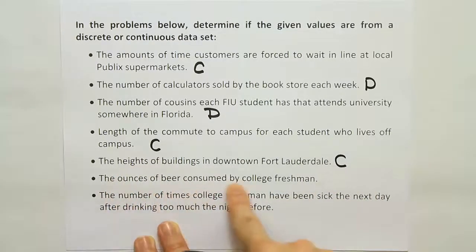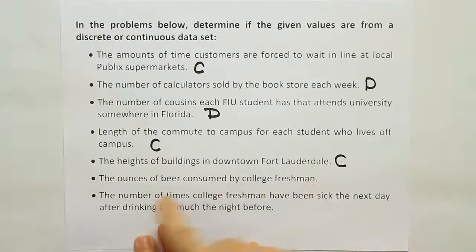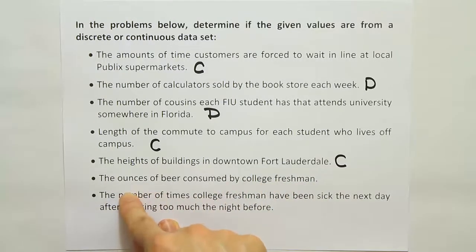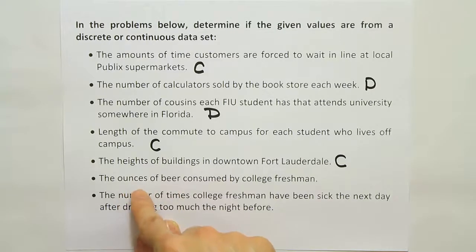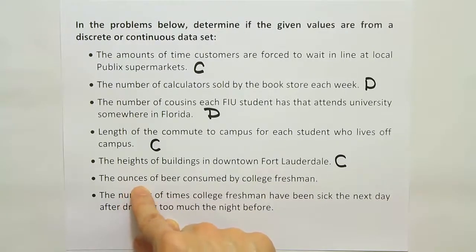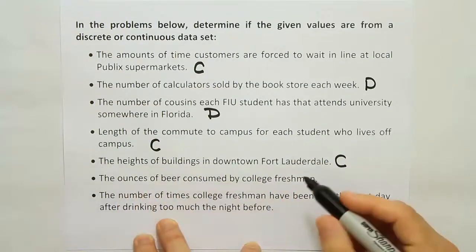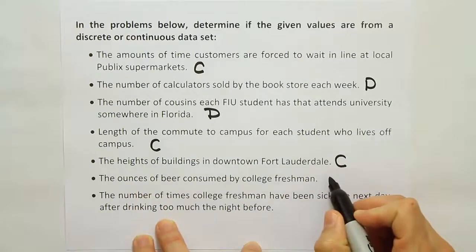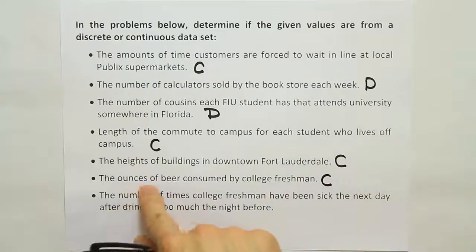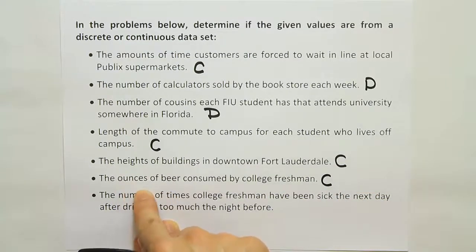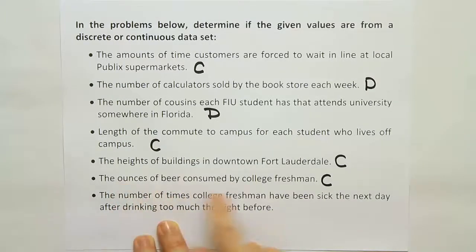The ounces of beer consumed by college freshmen. Sometimes people mess this one up because they might think of whole ounces — one ounce, two ounces, three ounces — but there's no reason why we wouldn't be able to have 1.24 ounces. We could use a very sensitive beaker to measure the amount of alcohol being consumed. So this is also a measurement, and it would be continuous. There's nothing wrong with having any possible fraction between, say, 4 ounces and 5 ounces, so that makes it continuous.